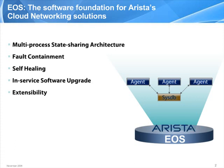The key EOS innovation here is centralizing the state associated with those tasks in one place, namely SysDB, while separating out the processing into separate address spaces. This architectural innovation enables us to achieve two key goals. First, software fault containment, which means that when a software fault occurs, the damage is limited to a single agent. Second, stateful restart, which means that when a failed agent is restarted, it picks up where it left off. The next slide illustrates these critical reliability features.